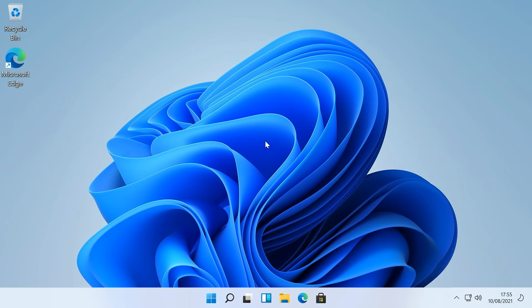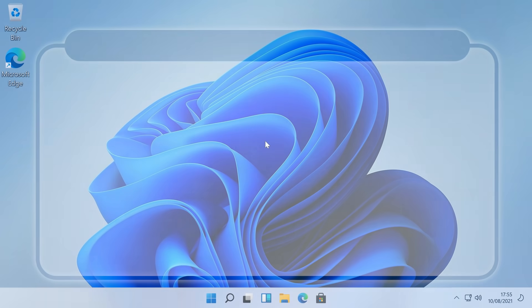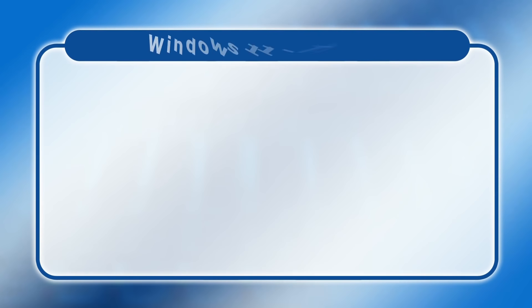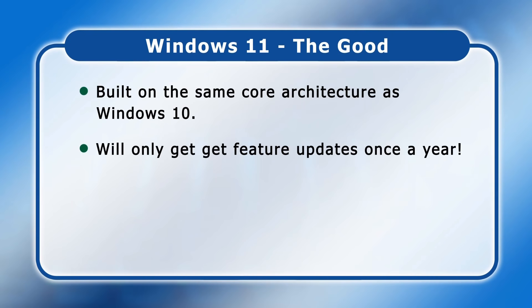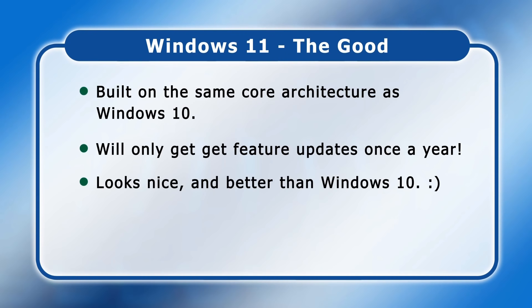I've called this video Windows 11: The Good, The Bad, and The Ugly. Under the good: Windows 11 is built on the same core architecture as Windows 10, which will maximize software compatibility and ought to minimize bugs. Also positive, Windows 11 will only get feature updates once a year — a big improvement on Windows 10, which likes to stop you working and mess up your PC every six months. Who knows, in Windows 12 Microsoft may revert to providing only necessary security patches. Finally, I have to admit that Windows 11 looks rather nice — better than Windows 10 to my eyes.